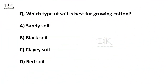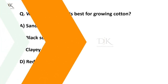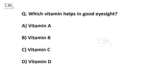Which type of soil is best for growing cotton? Right answer is black soil. Which vitamin helps in good eyesight? Right answer is vitamin A.